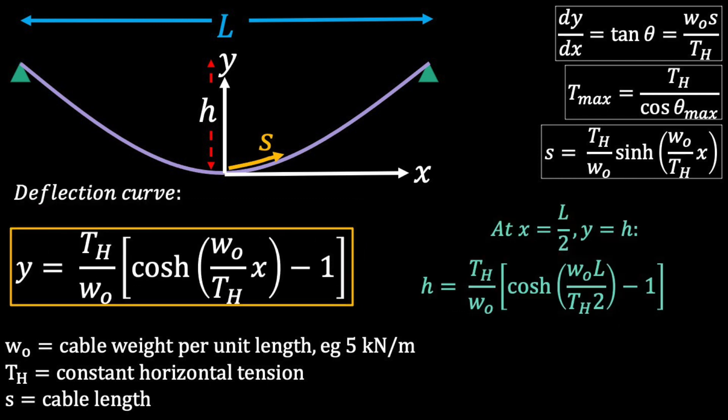Our last relationship is the deflection curve. It describes the shape of the freely hanging cable. We'll often use it with the boundary condition that x is equal to span over 2 to help us solve problems.